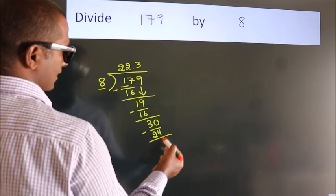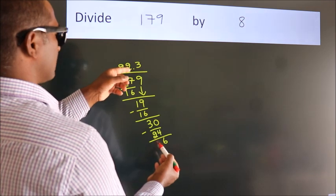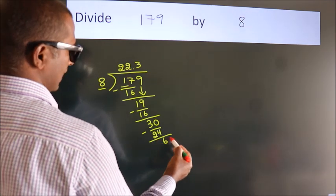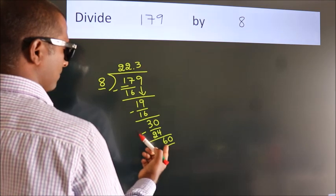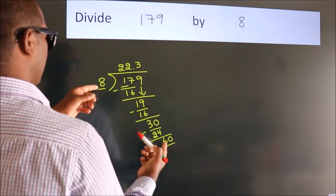After this, we already have the decimal. So directly take 0. So 40. When do we get 40 in the 8 table?